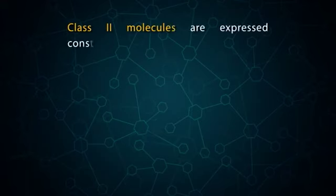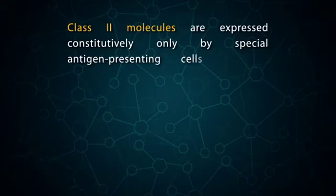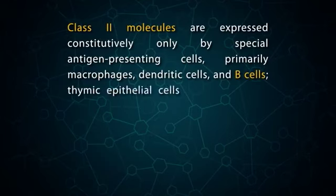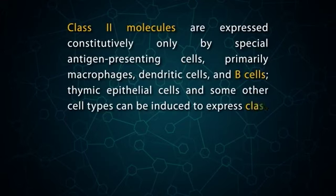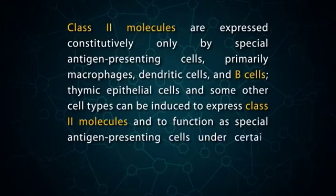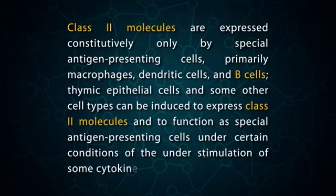Unlike class 1 MHC molecules, class 2 molecules are expressed constitutively only by specialized antigen-presenting cells — primarily macrophages, dendritic cells, and B cells. Thymic epithelial cells and some other cell types can be induced to express class 2 molecules and to function as specialized antigen-presenting cells under certain conditions, including stimulation by some cytokines.